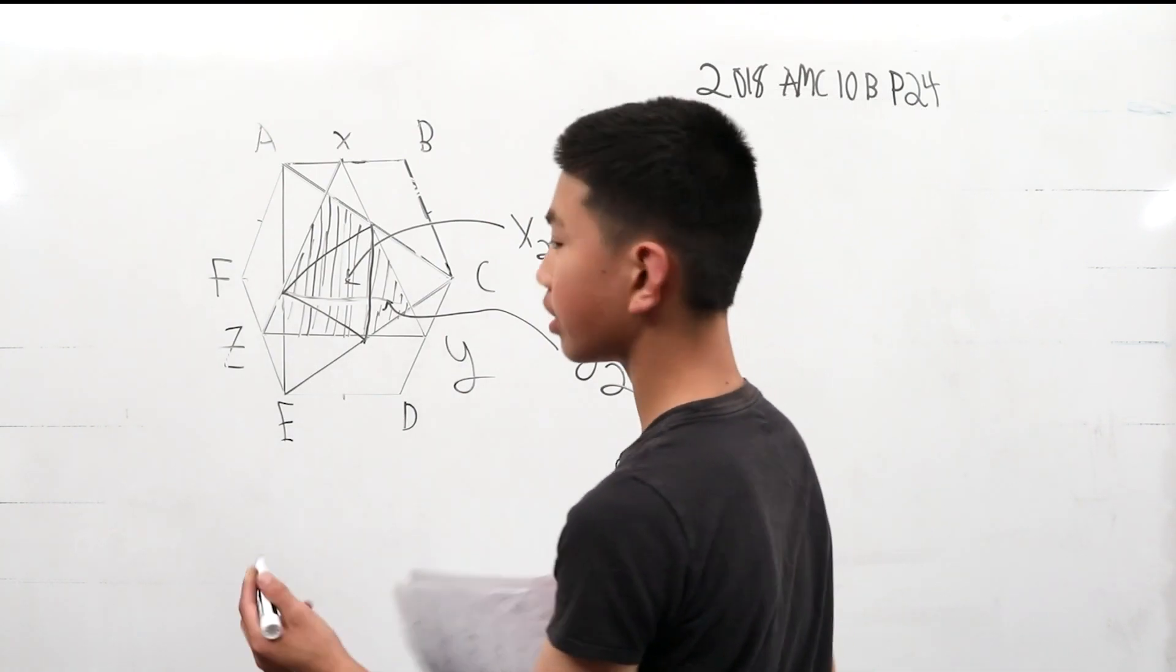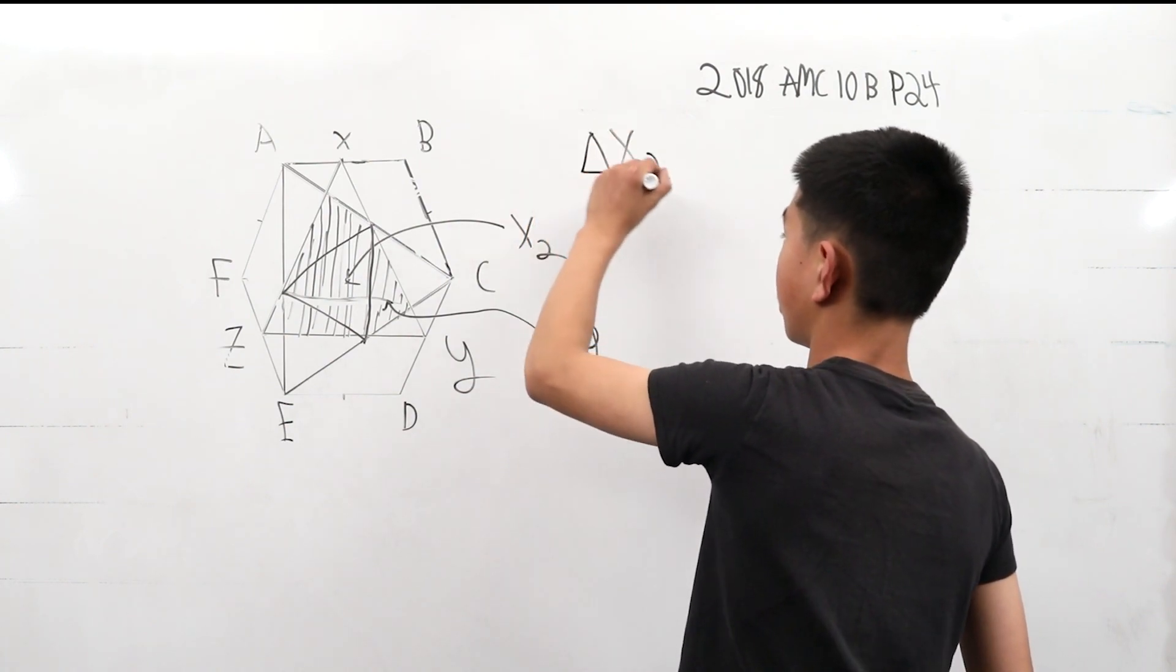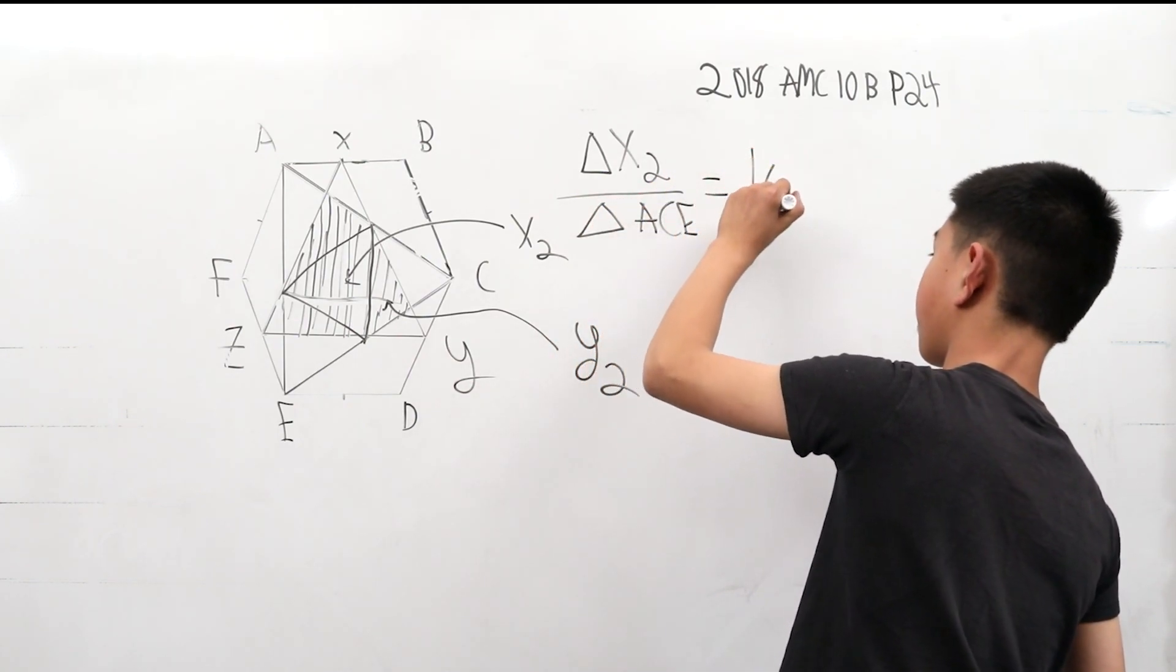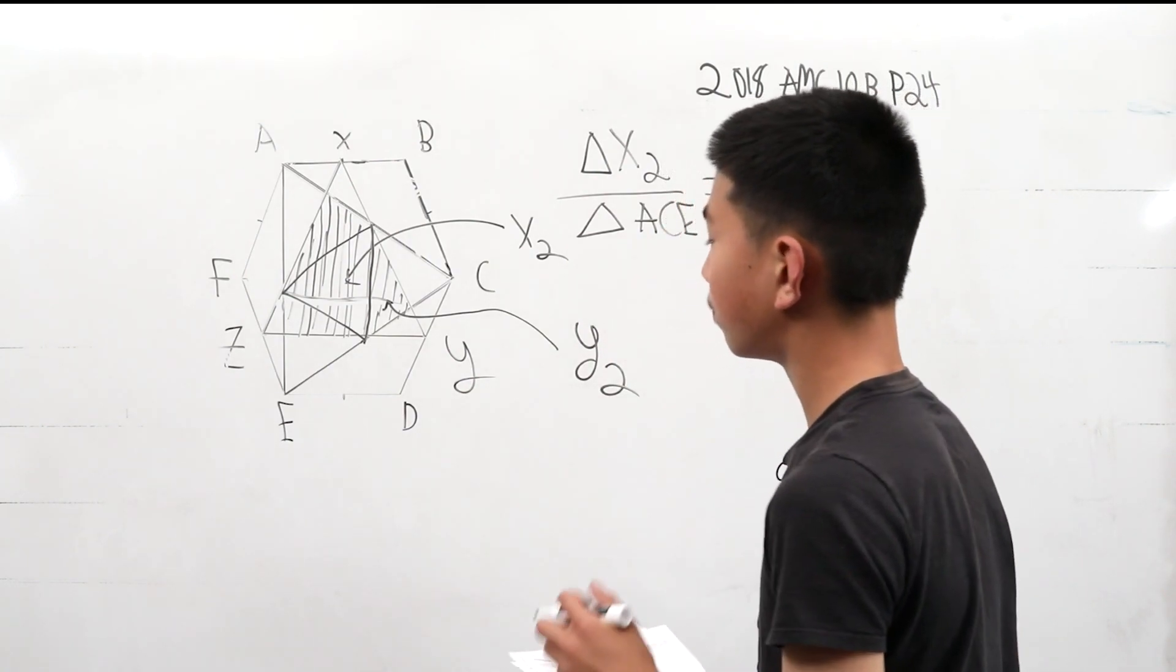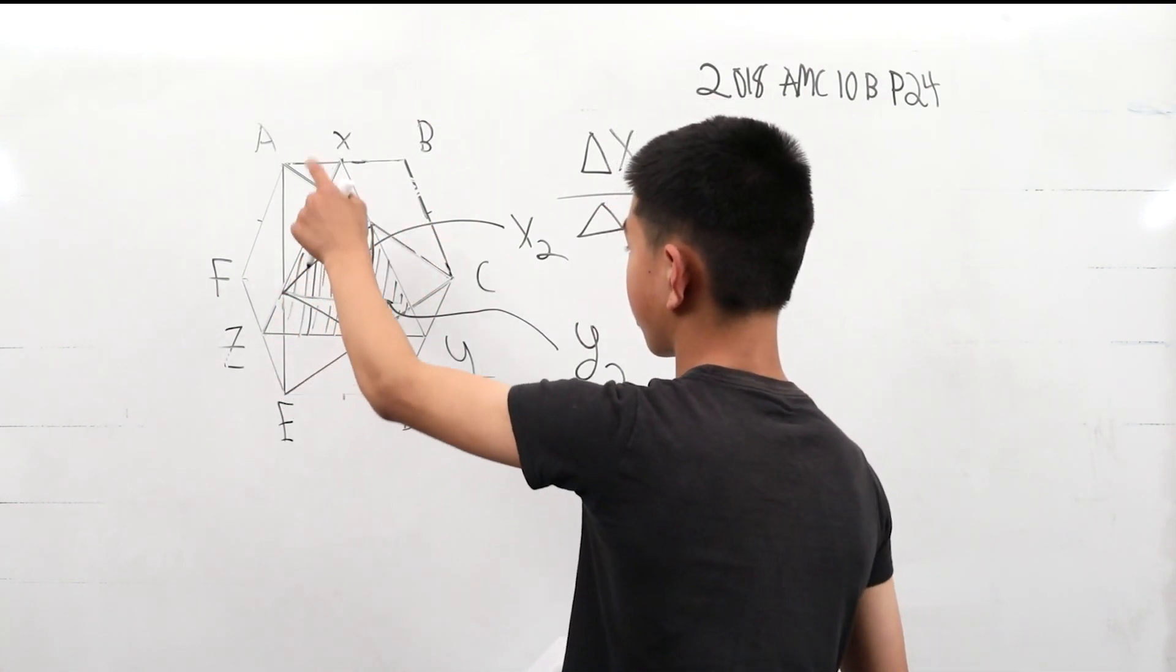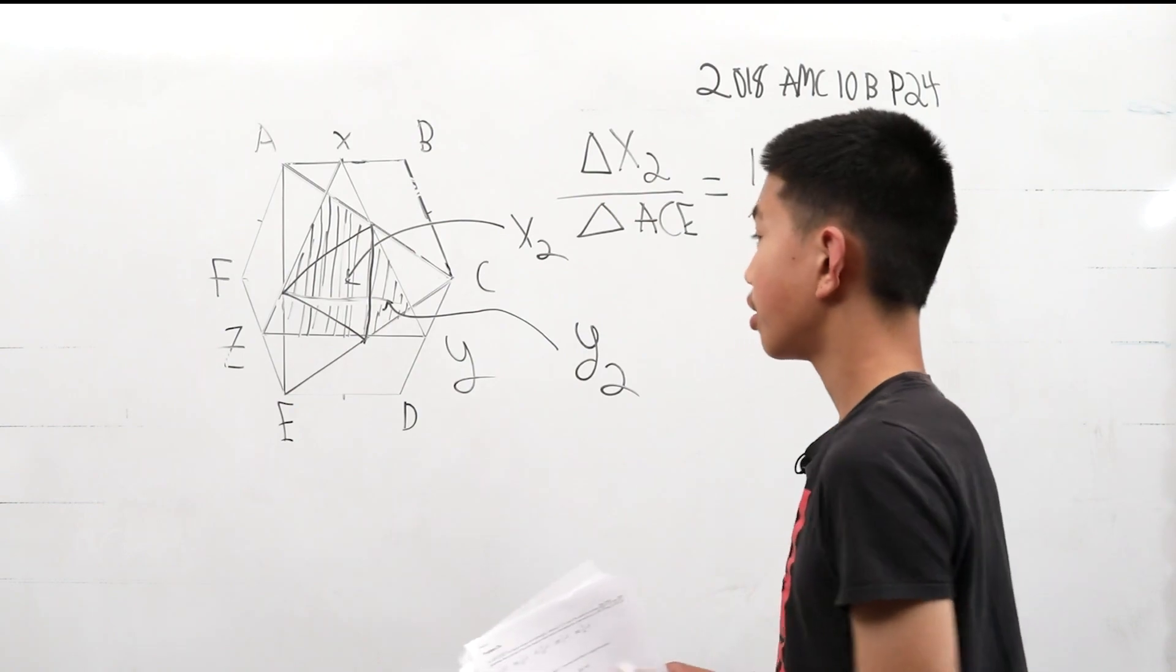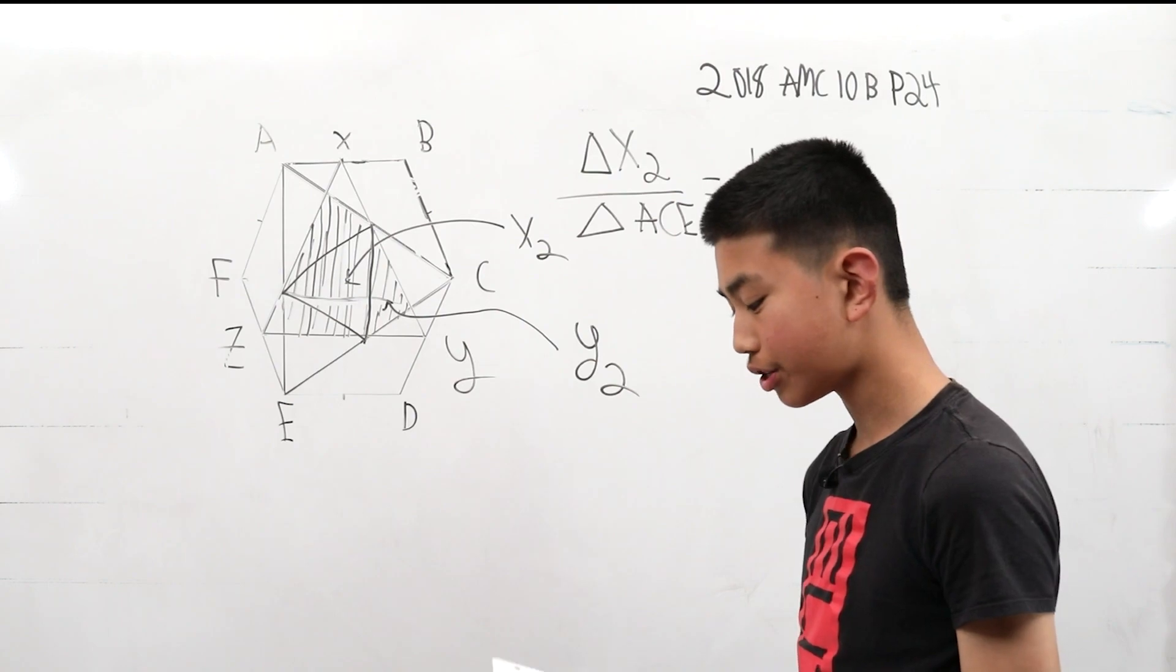But first we realize that the ratio of X2 to triangle ACE is 1 fourth. So that's a 1 to 4 direct ratio because when we draw this triangle here, there's three other triangles on the outside. This one, this one, and this one, including these Ys. So we know that ratio is true.